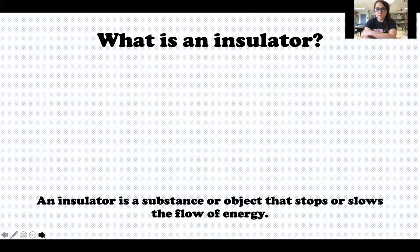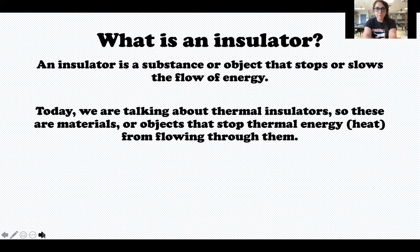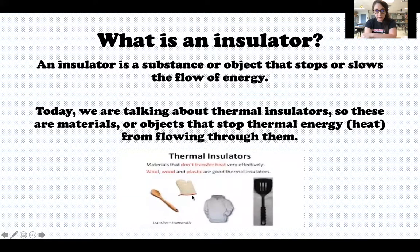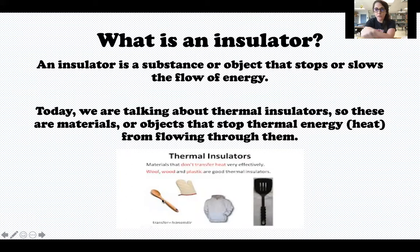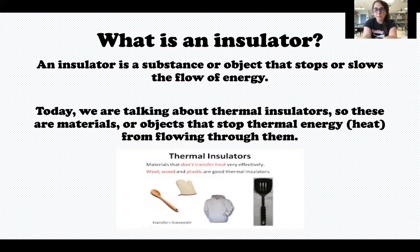An insulator is a substance or object that stops or slows the flow of energy. Today we're talking about thermal insulators — these are materials or objects that stop heat from flowing through them. Examples include wood, cotton or wool, and plastic. A lot of cooking utensils are made of wood or plastic. When you're stirring your food, these things prevent you from getting burned. If the wooden spoon is down in something very hot, the heat cannot travel up to your hand because wood is a thermal insulator — it stops the heat from traveling through it.